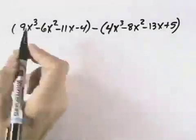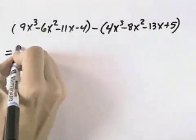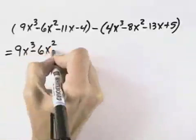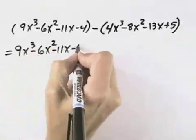Because the first polynomial has no symbol in front, we may drop the parentheses there, so it just becomes 9x cubed minus 6x squared minus 11x minus 4.